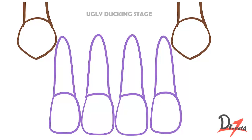Assalamu alaikum, today we are going to study about the ugly duckling stage, which is also known as the Broadbent phenomenon. This basically deals with the diastema we see in children at the age of eight years.